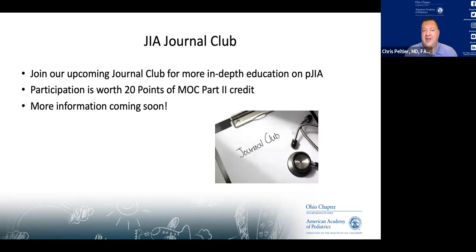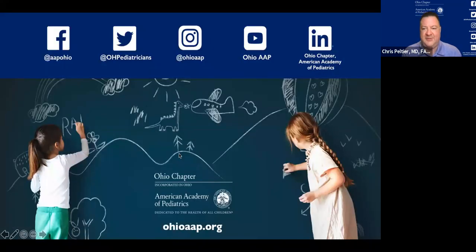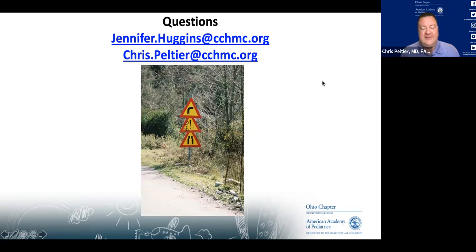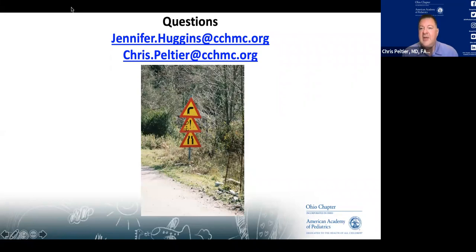I want to thank all of you for joining us, thank Dr. Huggins, and especially thank Shannon — I think her children were involved in the making of those videos. I've got a question that's been burning in me: I typically refer to physical therapy first when I see a child with joint pain unless I'm worried it's inflammatory. I've noted over the last several years that PT reports are showing more and more kids with a diagnosis of hypermobility. Is this truly more hypermobility, or is it similar to autism where we have more stringent diagnostic criteria?